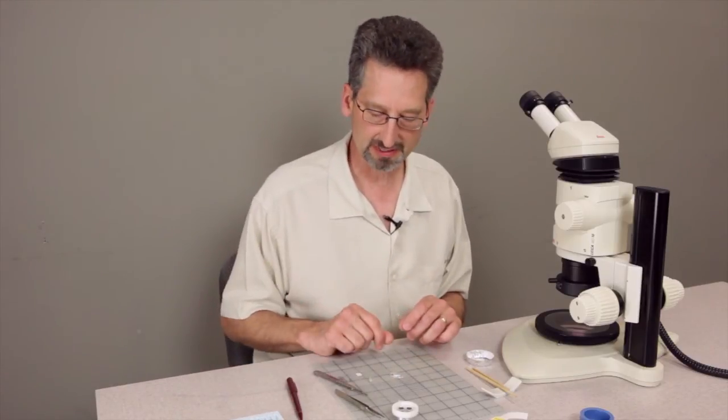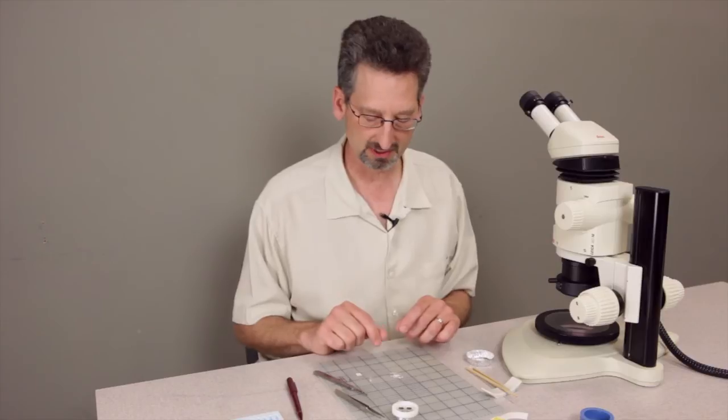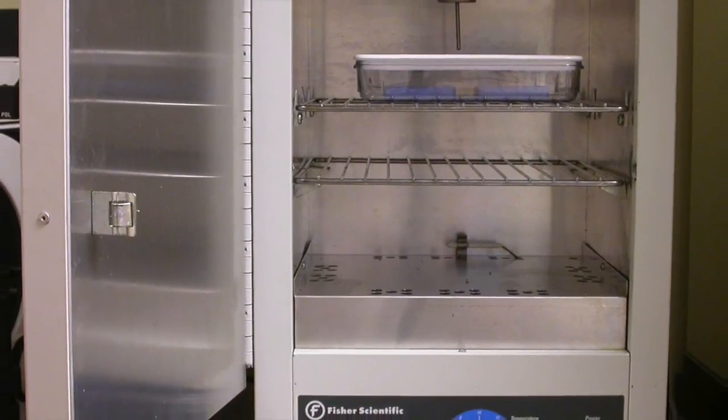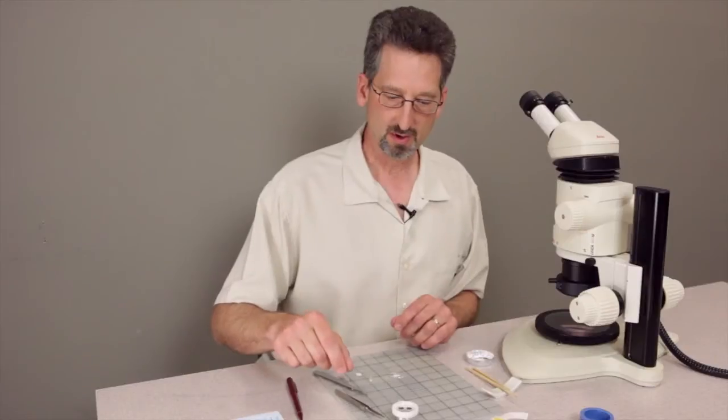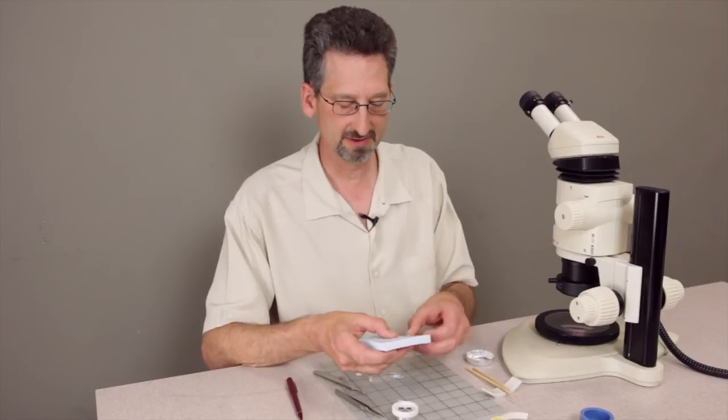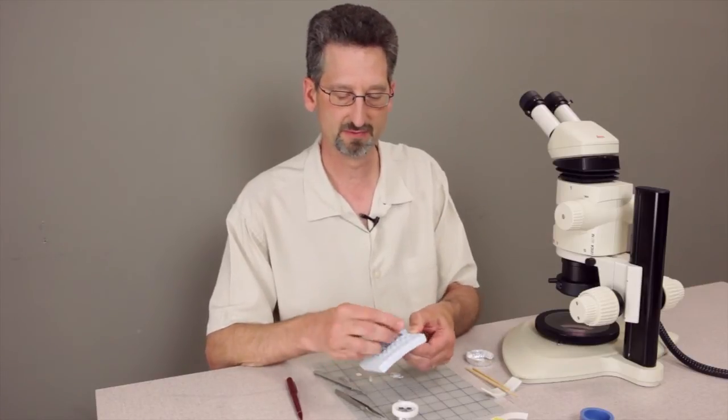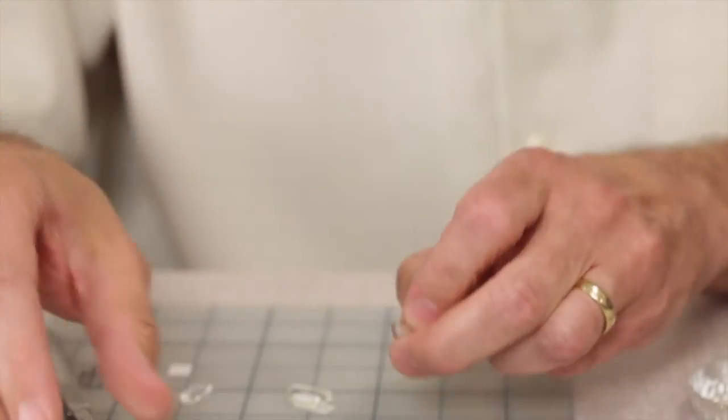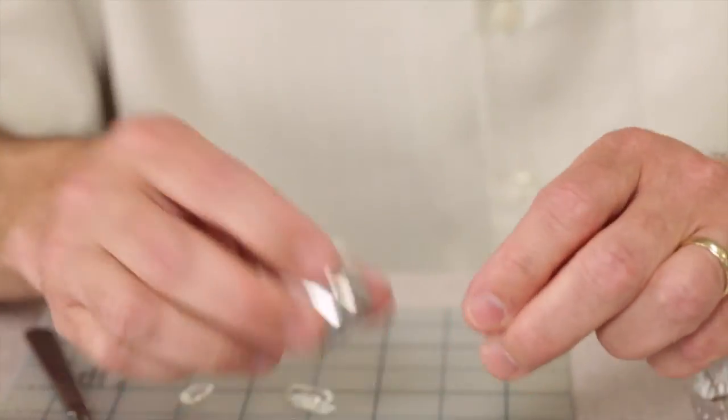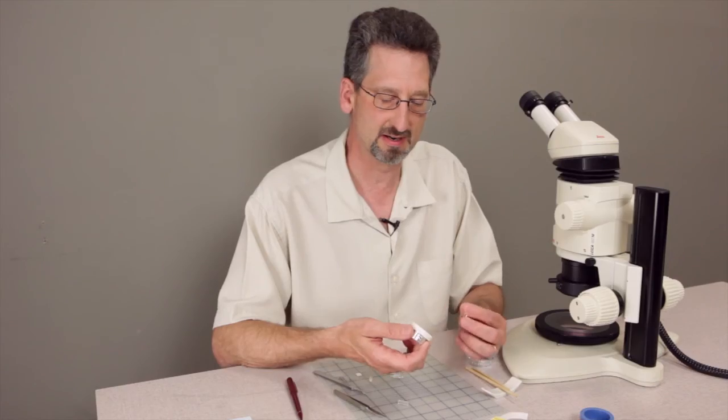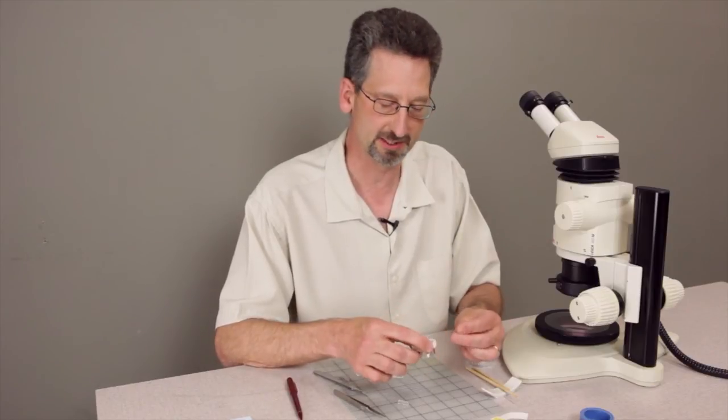The next stage is to cast or cure that in an oven and that might take about three hours. Once it's out of the oven you can pull the completed casting out and then position it in the holder and clamp that in the holder and you'll be ready to go to the polishing stage.